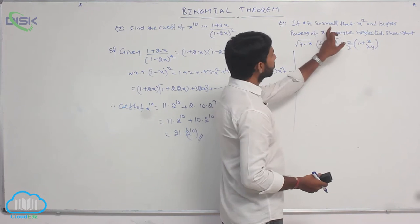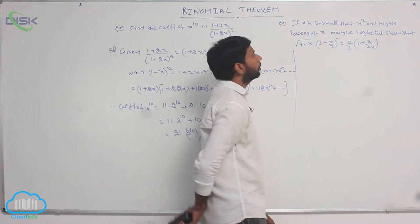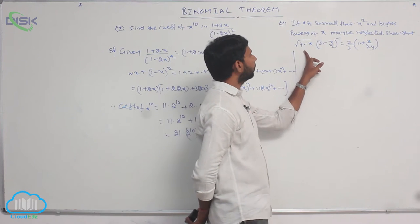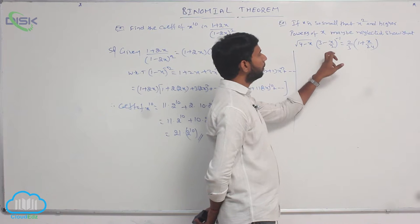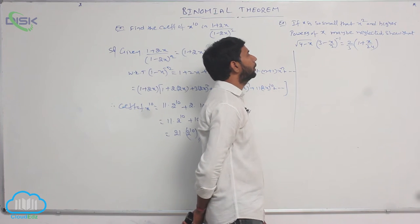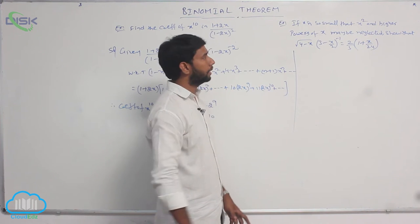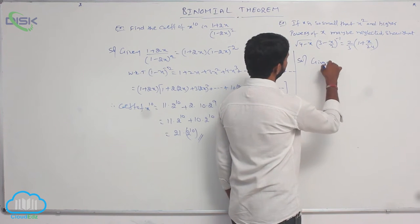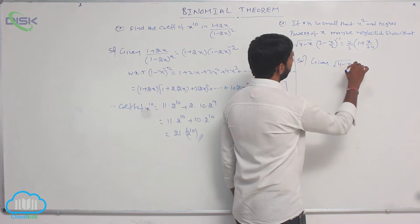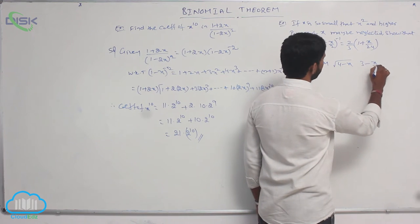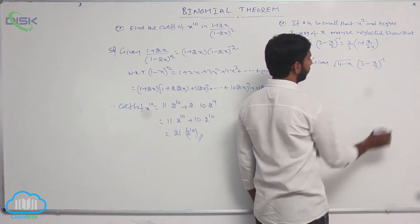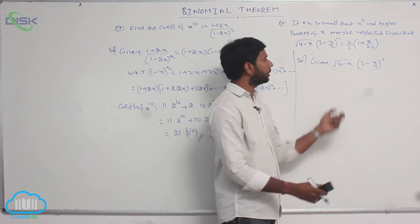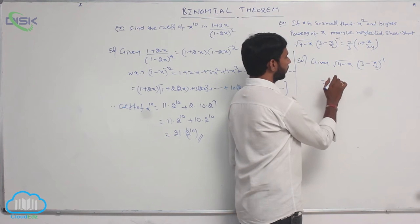Next example: if x is so small that x squared and higher powers of x may be neglected, then show that square root of (4 minus x) into (3 minus x by 2) whole power minus 1 is equal to 2 by 3 of 1 plus x by 24. Given this expression, we rewrite each factor in the form 1 plus x or 1 minus x.